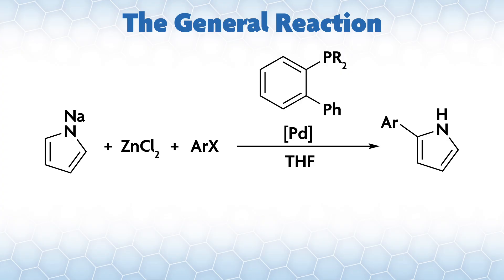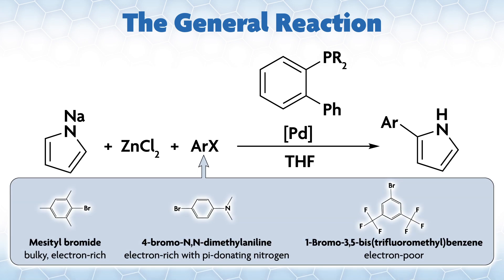One problem with methodology studies is that you can't fully optimize every substrate. Not in one graduate career, anyway. In the paper, Gunnar picked three aerobromides as models. Mezotyl bromide, which is bulky and electron-rich. 4-bromo-NN-dimethylaniline, so electron-rich with pi-donating nitrogen. And 1-bromo-3,5-bis-trifluoromethyl benzene, which is electron-poor. Why these? They represent different personalities of substrates, sterically hindered, donating, or electron withdrawing, which might need tailored conditions. In other words, heat optimized for archetypes that can be applied to similar compounds.